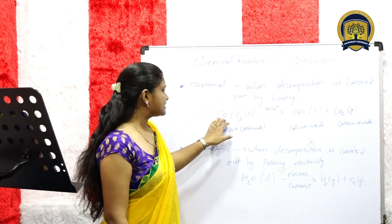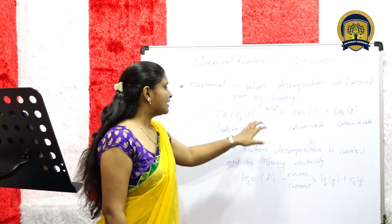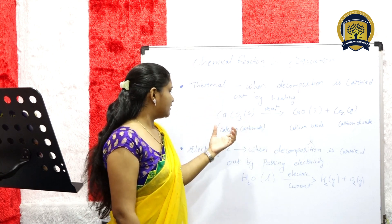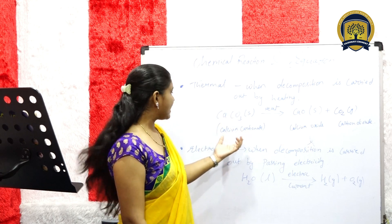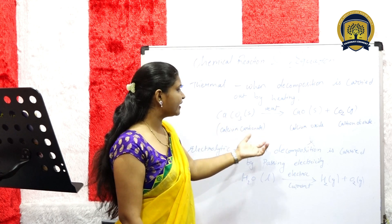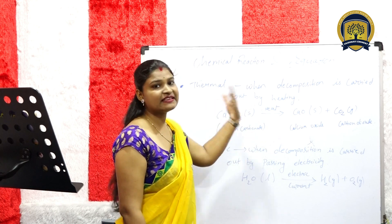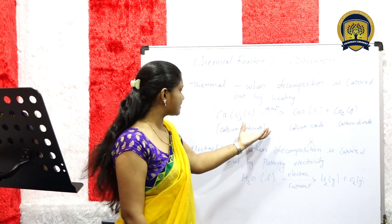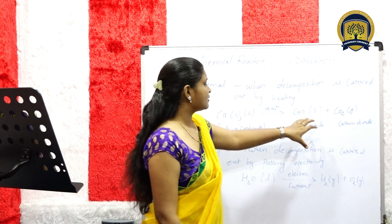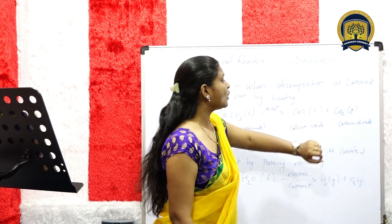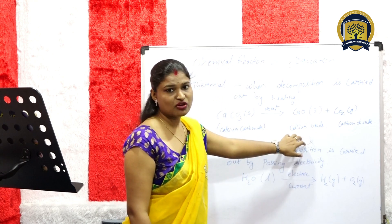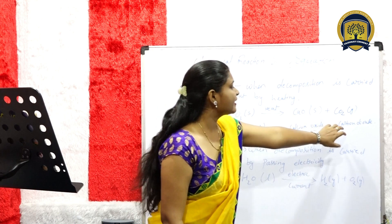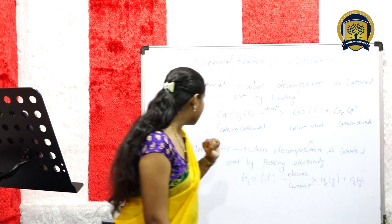For example, CaCO3 solid on the reactant side is calcium carbonate. When we heat this substance, it gives CaO and CO2, that is calcium oxide and carbon dioxide.